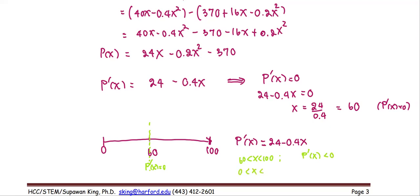If x is between 0 and 60, for example 50, 24 minus 0.4 times 50, so we have P prime greater than 0. We put a plus sign here, put a minus sign there. That tells us the profit P(x) is increasing if x is between 0 and 60, and profit is decreasing if x is greater than 60, less than or equal to 100.